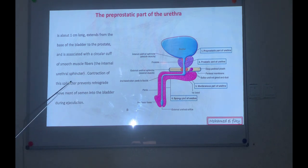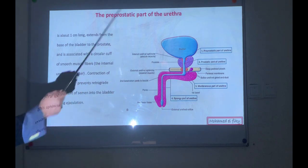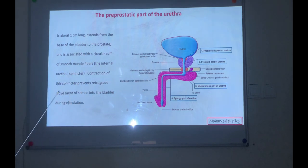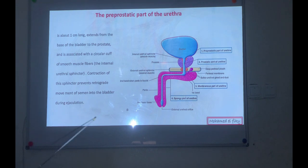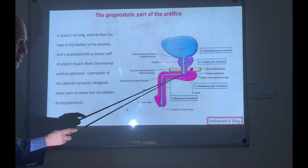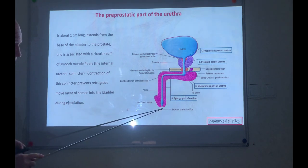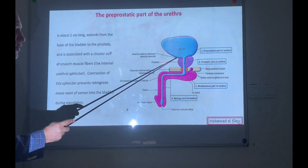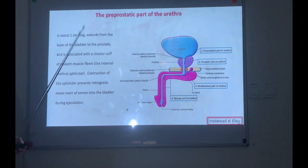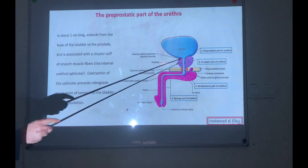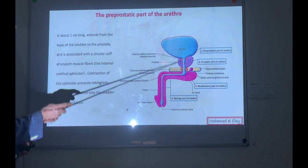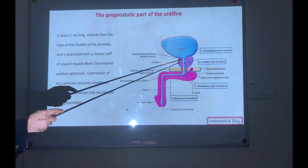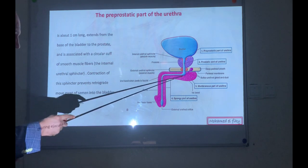The pre-prostatic part is surrounded by smooth muscle fibers forming the internal urethral sphincter. Contraction of this sphincter prevents retrograde movement of semen into the bladder during ejaculation, so the semen descends downward.